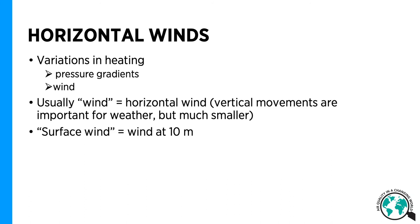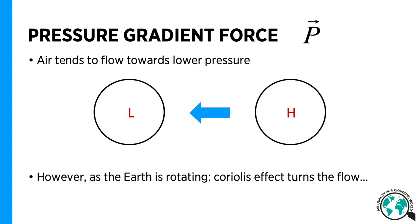By surface wind, we mean wind at 10 meters above the surface. The pressure gradient makes the air flow from higher pressure towards the lower pressure as the imbalances in the atmosphere tend to find equilibrium. This is called the pressure gradient force.